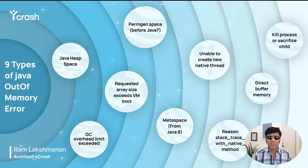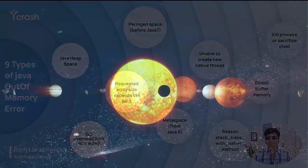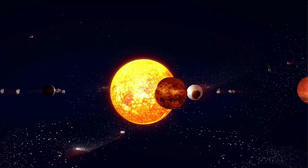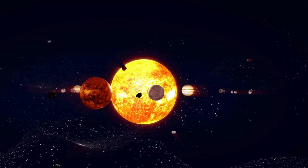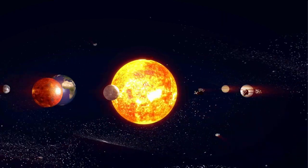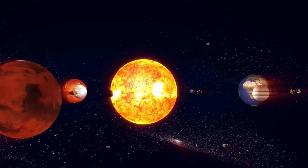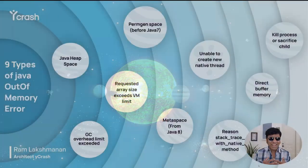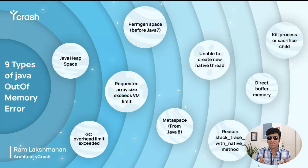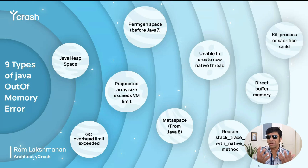Hello friends. In this video, we are going to be talking about nine types of out-of-memory errors. There are actually nine planets in our solar system. There is some belief in certain cultures that the position or the orbit of these planets has an influence on your body, mind, and thought process. Let me see after this talk whether how we approach out-of-memory errors and diagnosing them might have an influence on you.